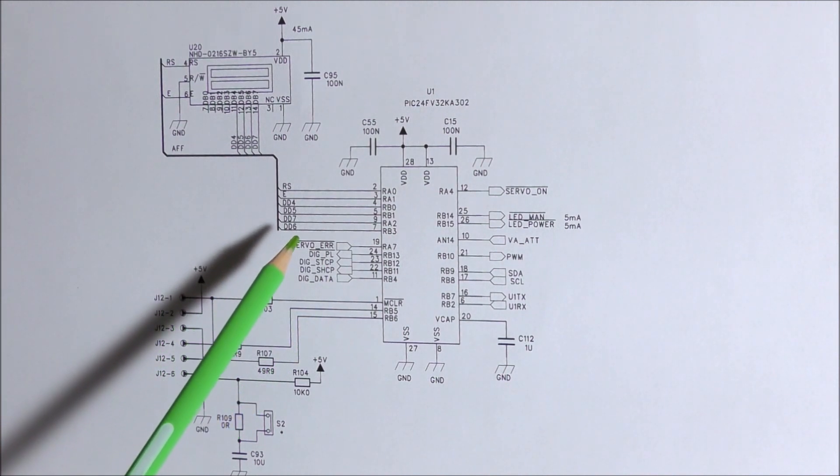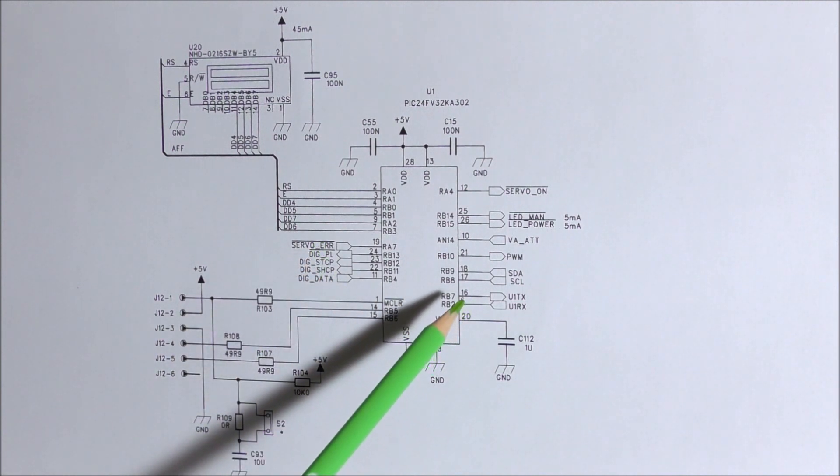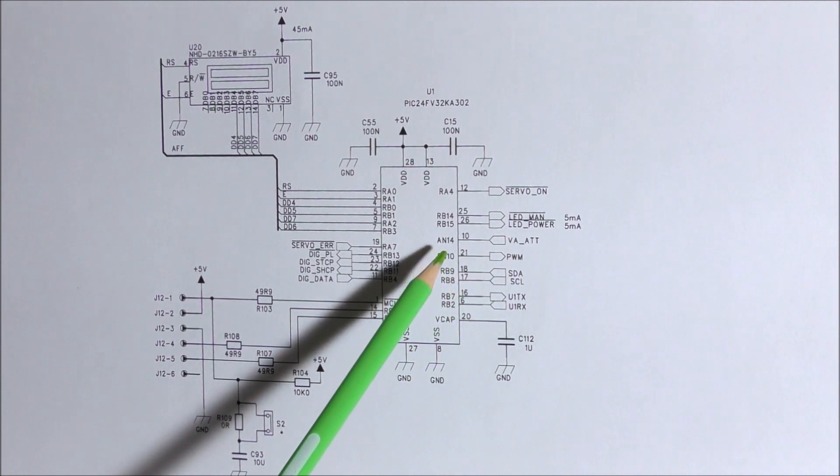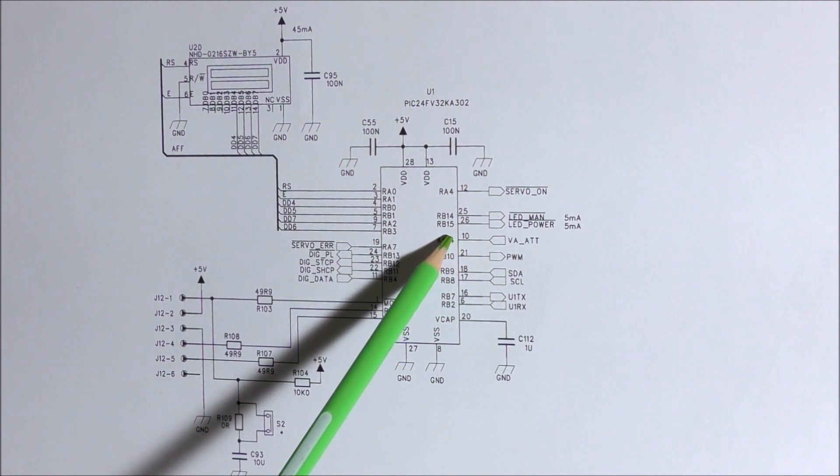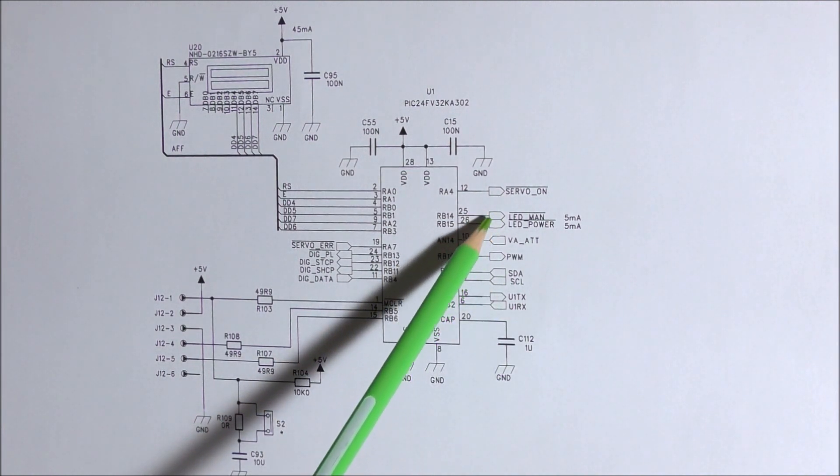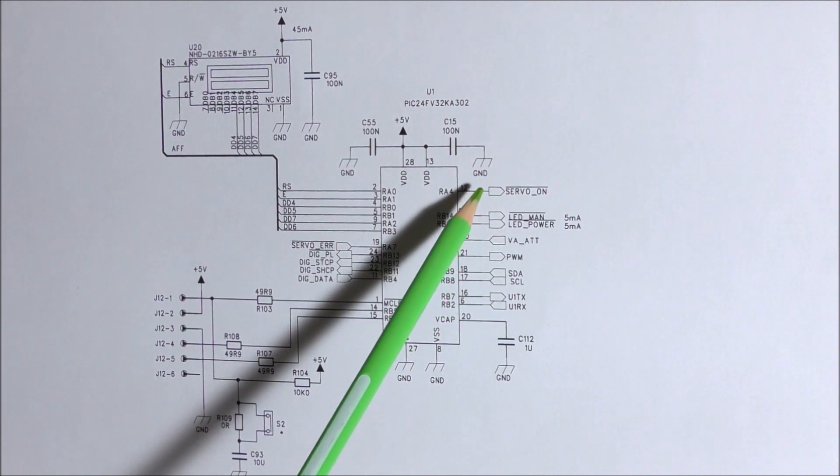There is the servo control error, which comes from the servo control assembly for the total temperature probe. We have here the transmit and receive lines for the UART interface. There is here the I2C bus for the ADC, the pulse width modulation output, which uses an output compare pin here. There is here an analog input for the measurement of the input voltage. These two lines that correspond to the two LEDs. And there is here a signal which permits to activate the servo control.